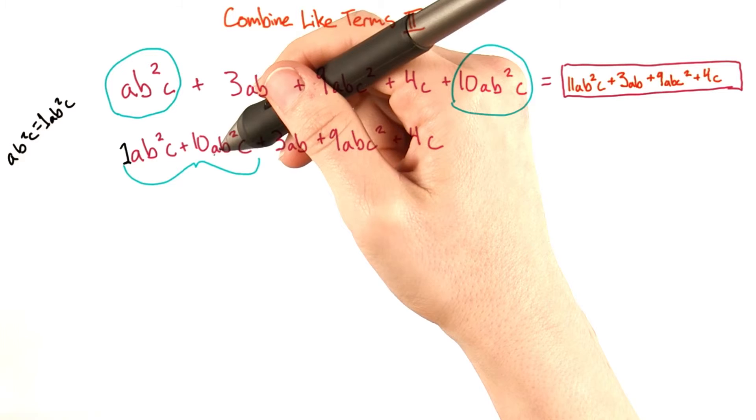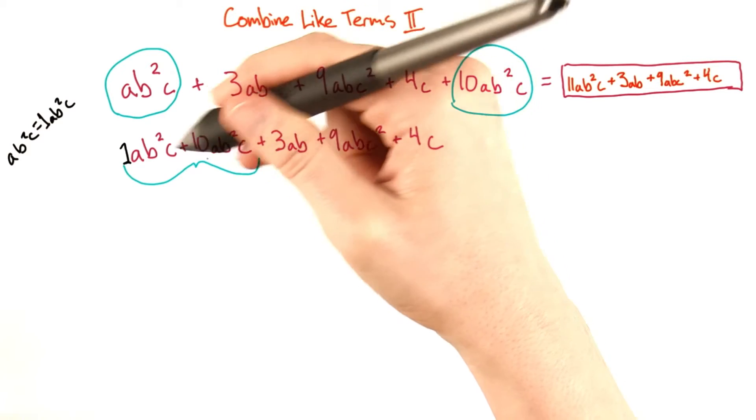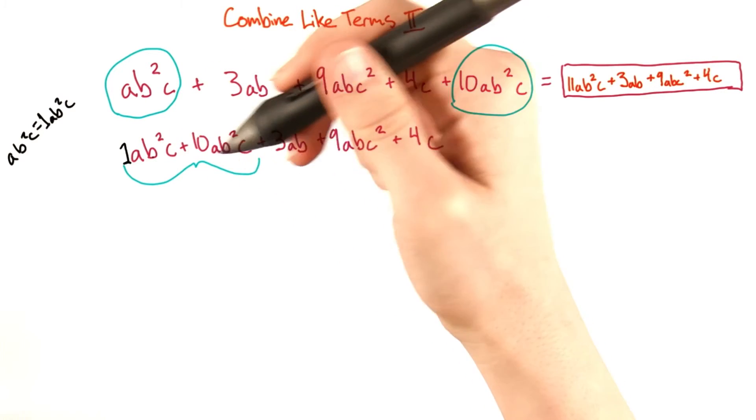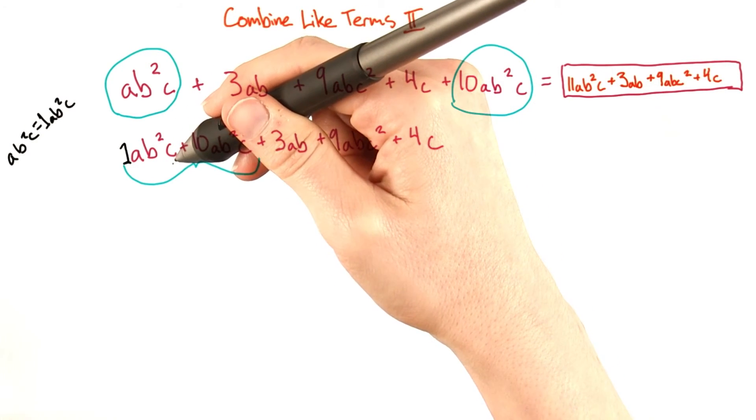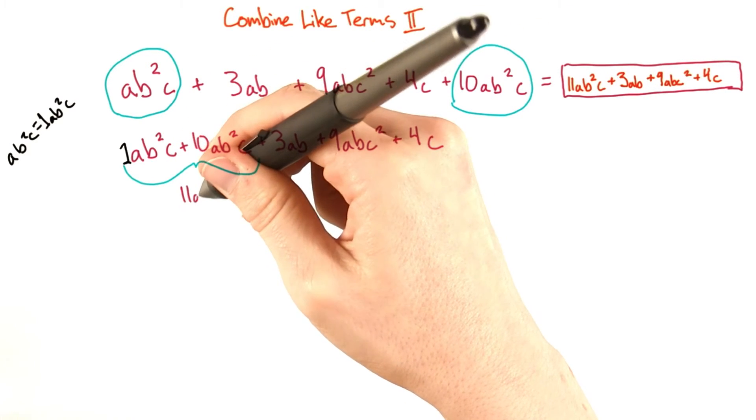That means that when we combine 10ab squared c with ab squared c, we're actually combining 10ab squared c with 1ab squared c, which gives us 11ab squared c.